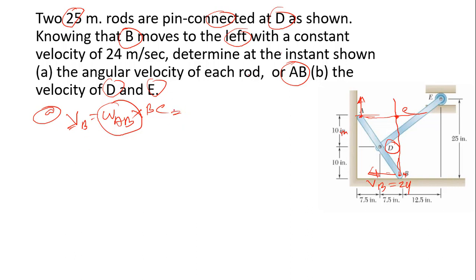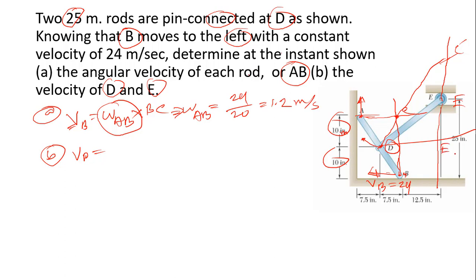To find angular velocity of AB: omega AB equals 24 divided by 20 (which is 10 plus 10), giving us 1.2 radians per second. For point B, the velocity is going in this direction. We draw the perpendicular and find the intersecting point C prime.